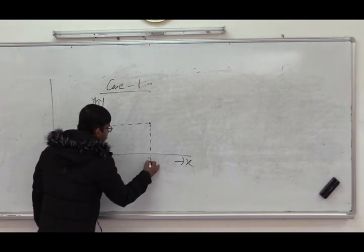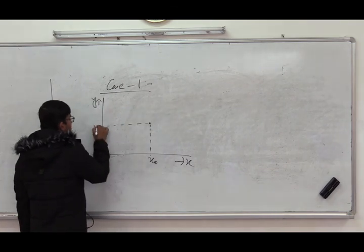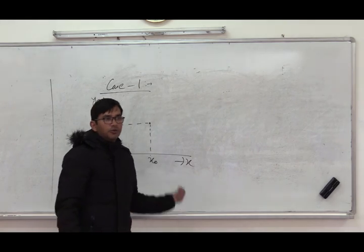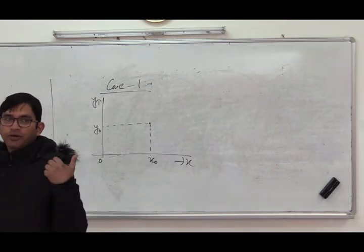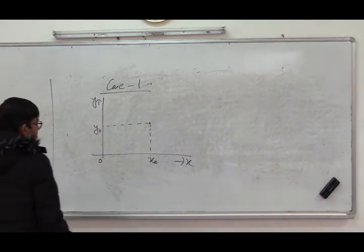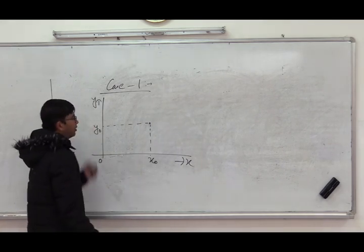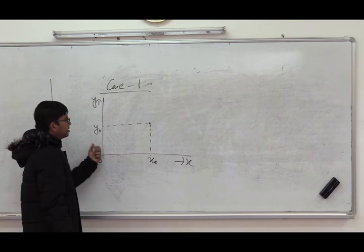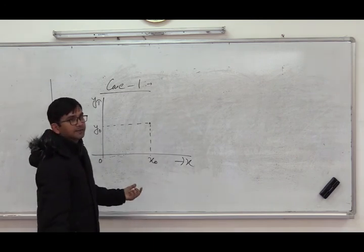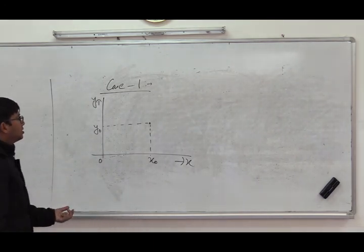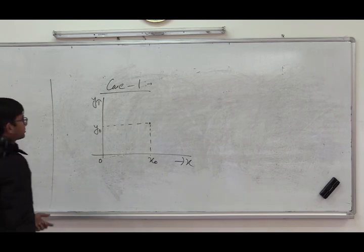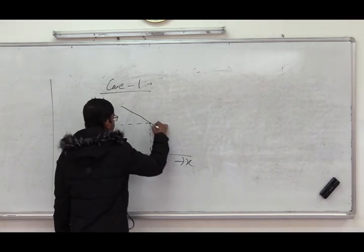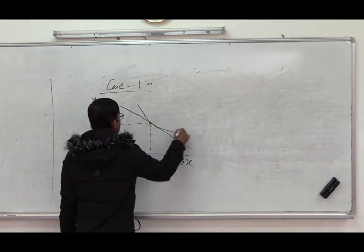The country can produce x0 units of x and y0 units of y. If we reduce the production of x, the production of y will not increase because the factors engaged in x cannot produce in y. Similarly, if we reduce the production of y, the production of x will not increase. So this is the autarkic equilibrium.